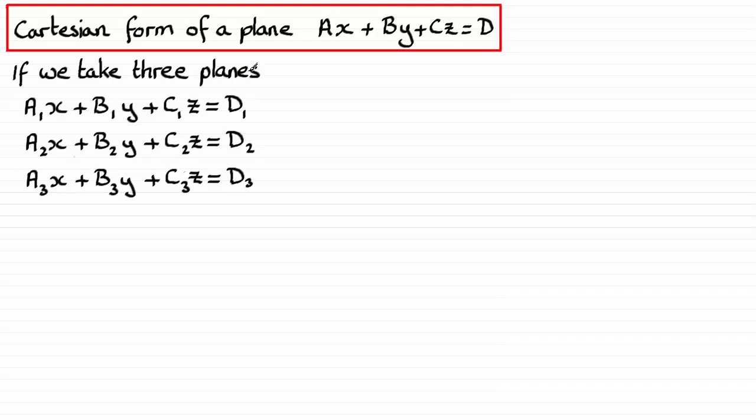Now if we take three of these planes with equations a1x plus b1y plus c1z equals d1, and similarly I've got one here with subscripts of 2 and subscripts of 3 here. If we took three of these planes, how could they be configured relative to one another?